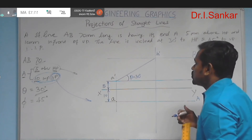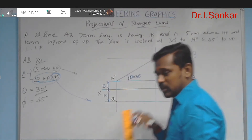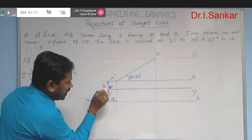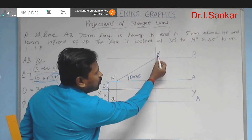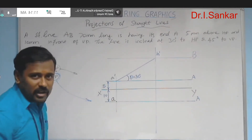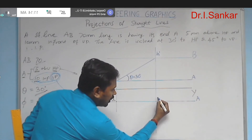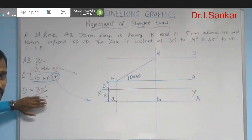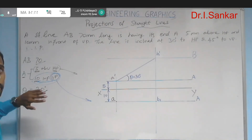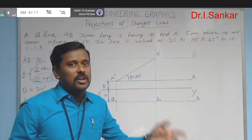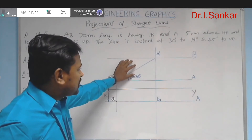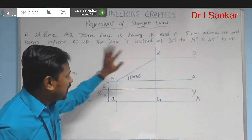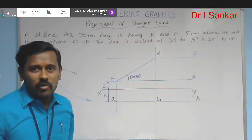Draw the projector from b1' and the locus for point b in the front view — whatever the next point b dash, it will be located on this locus. Now locate the pair of b1', which is b1 in the top view. By our first assumption — neglecting phi, assuming the line is inclined only to HP and parallel to VP — we get a simple front view a'b1' and a simple top view ab1. Half the work is now done.